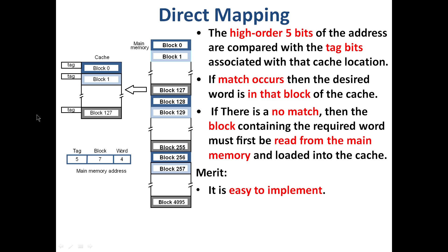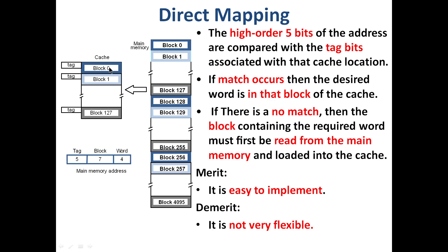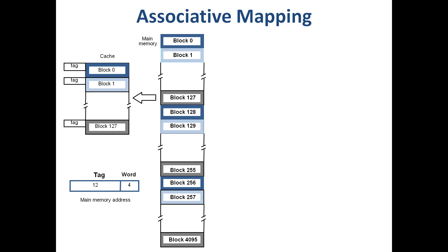Direct mapping is easy to implement. However, it is not flexible, because a main memory block can only be placed in one specific cache location. If that location is occupied, contention occurs and we must evict the existing block even if other cache locations are free.